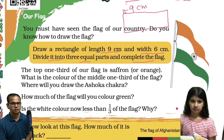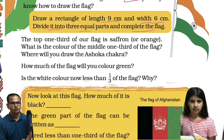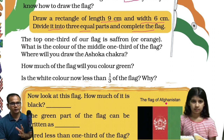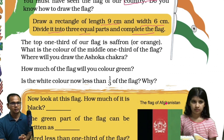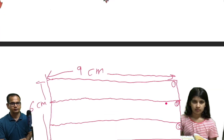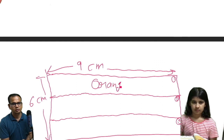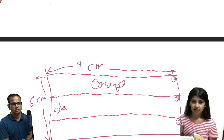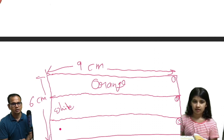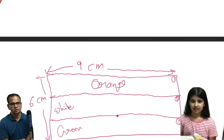And what is the next thing? It is talking about the top. One third of our flag is saffron, or orange. Saffron, or I can say orange. And this one? White. Ashoka Chakra. And this is green. And this is the Ashoka Chakra.